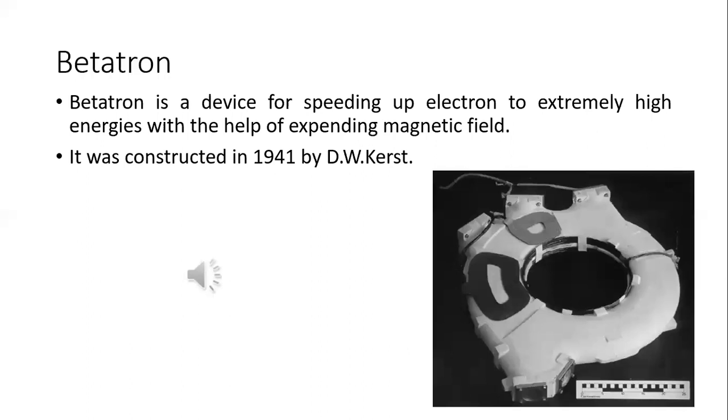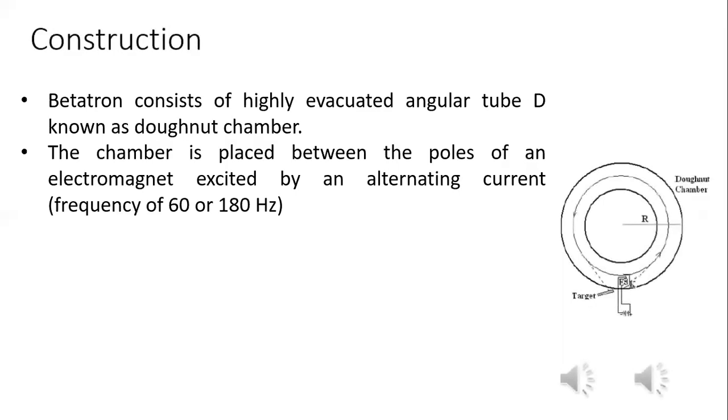The main drawback is that electrons cannot be accelerated through Van de Graaff generator as well as cyclotron. This is a drawback solved by betatron. It was constructed by Kerst in 1941. Betatron is a device for speeding up the electron to extremely high energies with the help of an expanding magnetic field.